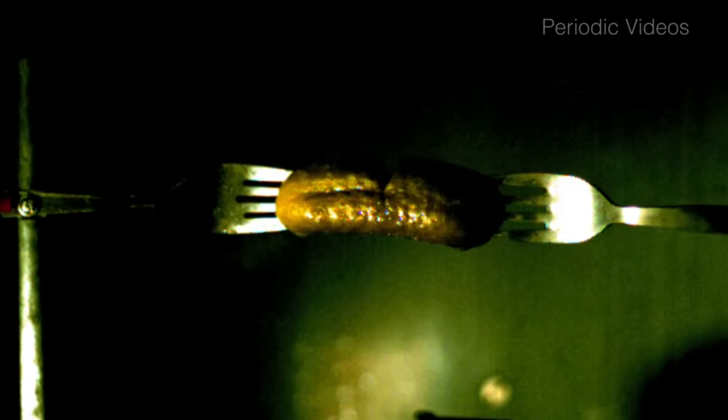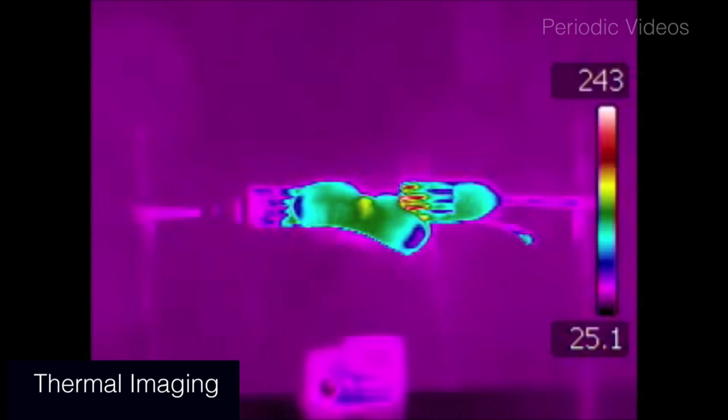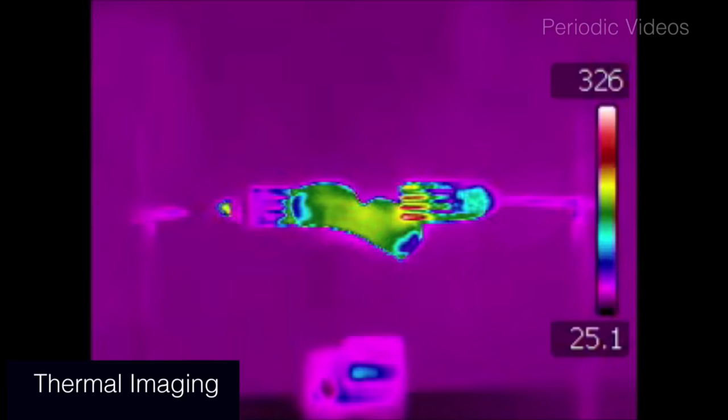And you can see really well with the thermal imaging camera that the forks themselves the prongs of the fork get very hot. Because they're conducting away the heat from this hot zone.